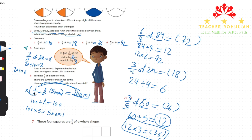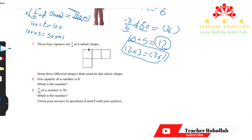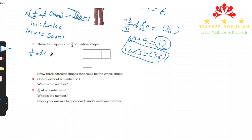In question seven, four squares represent one-fourth of the whole shape. To find the total number of squares, we set up: one-fourth of something equals four. Dividing 4 by 1 and multiplying by 4 gives 16. So there are 16 squares in the whole shape.